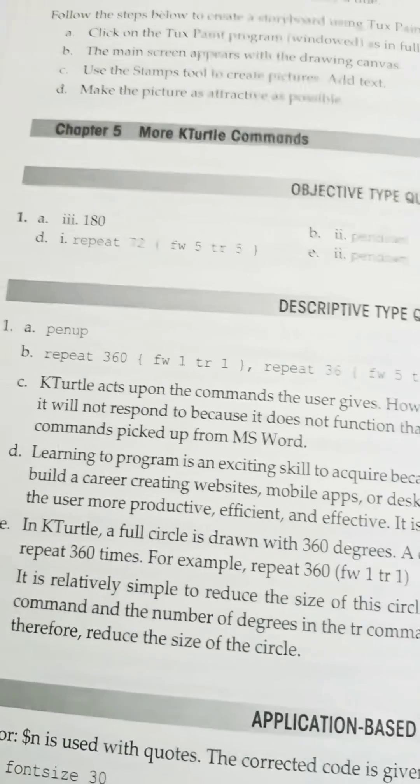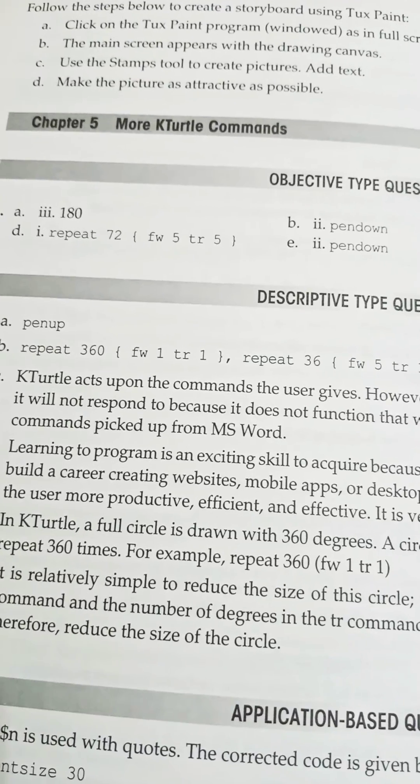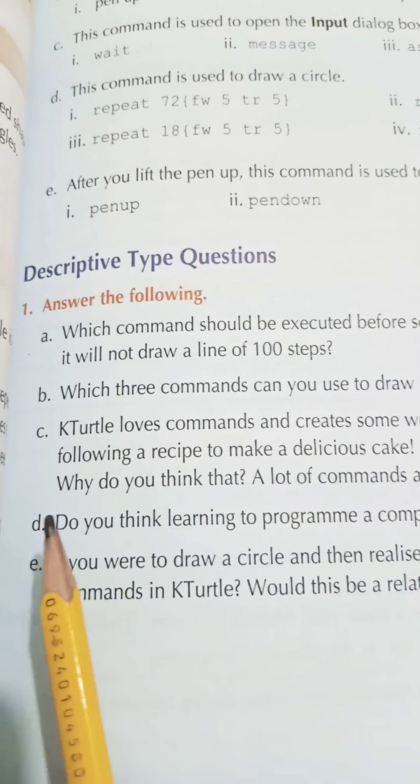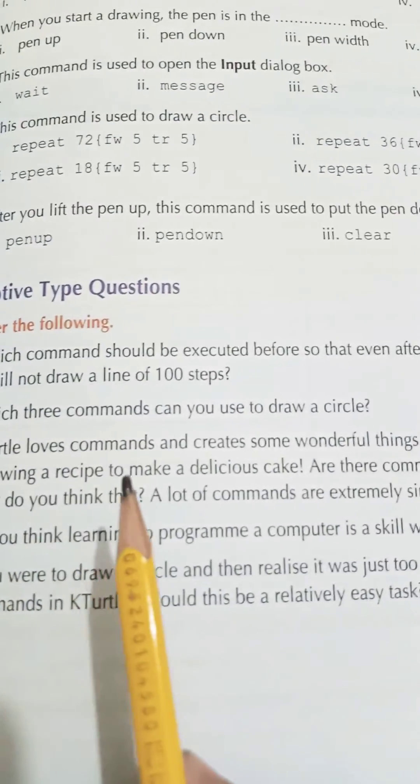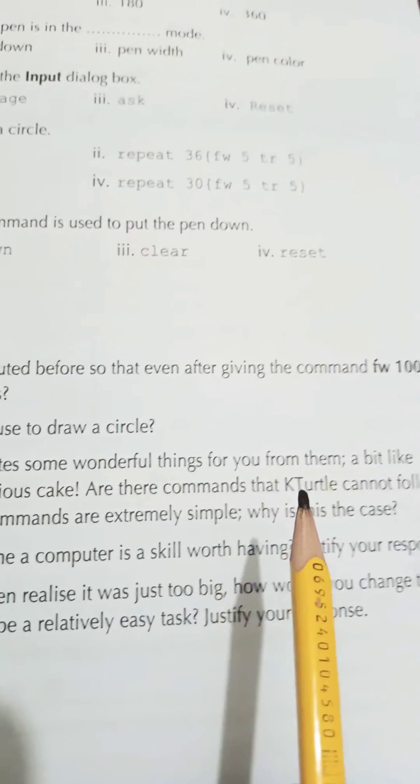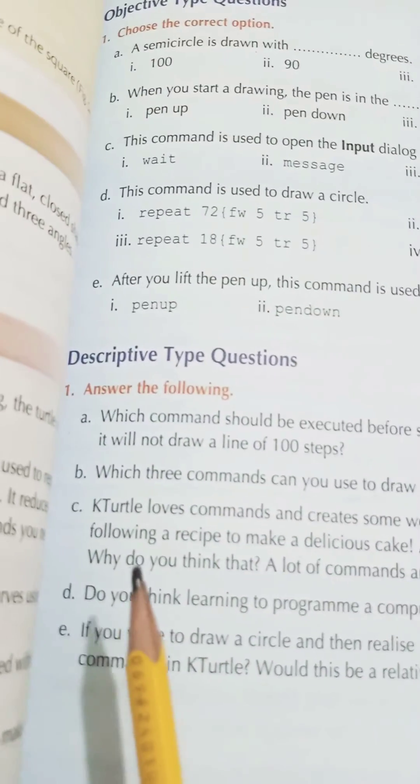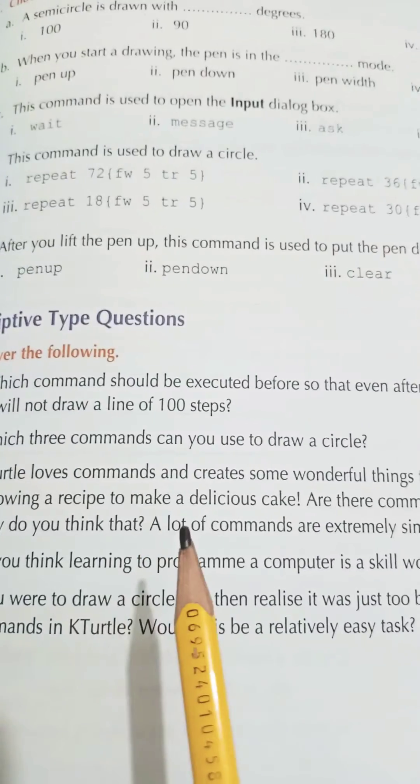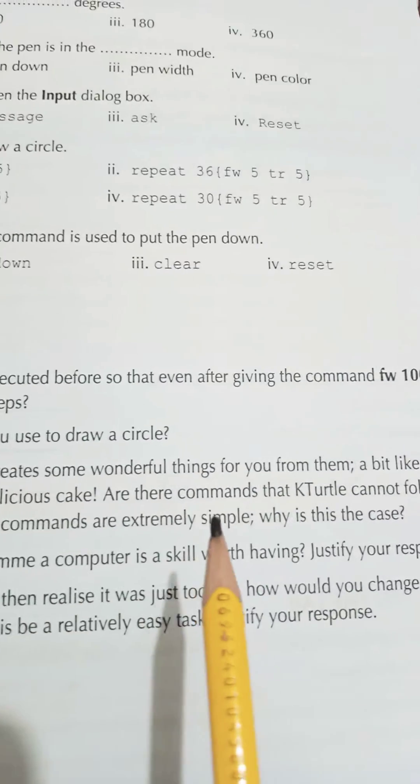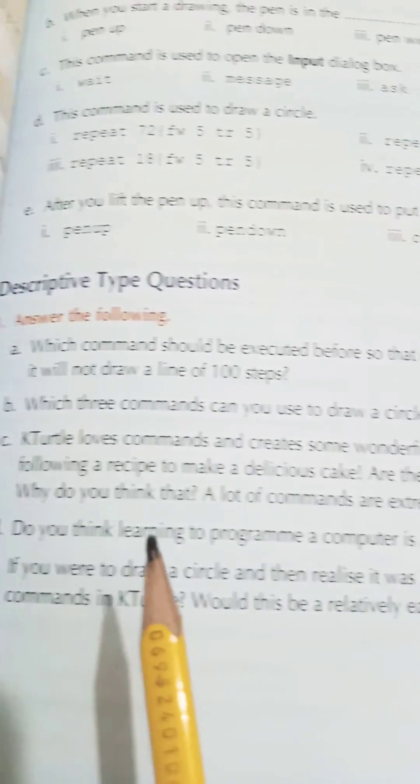Okay, these are the three commands by which we can draw a circle. Part number c: K-Turtle loves commands and creates some wonderful things for you from them, a bit like following a recipe to make a delicious cake. Are there commands that K-Turtle cannot follow? Why do you think that? A lot of commands are extremely simple, why is this the case?